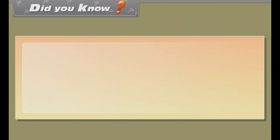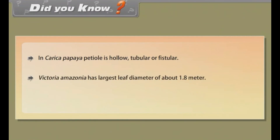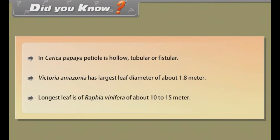Did you know? In Carica papaya, the petiole is hollow, tubular or fistular. Victoria amazonica has the largest leaf, with a diameter of about 1.8 meters. The longest leaf is of Raffia vinifera, measuring about 10 to 15 meters.